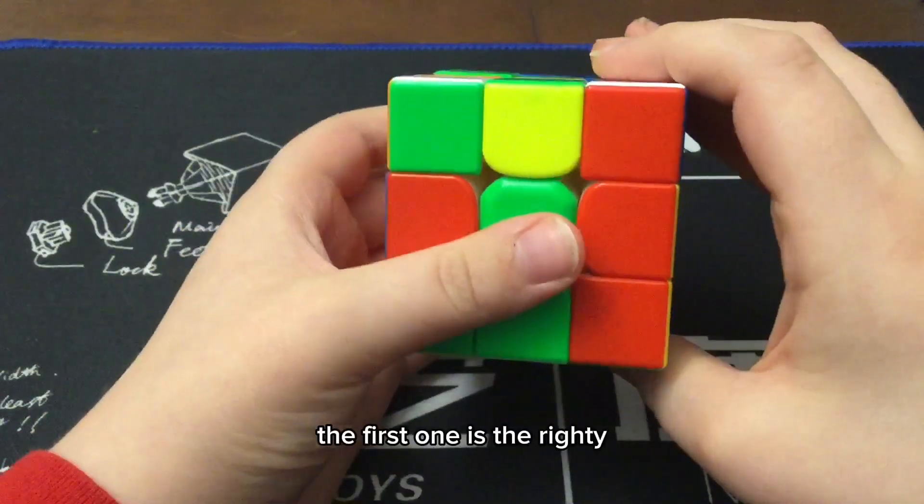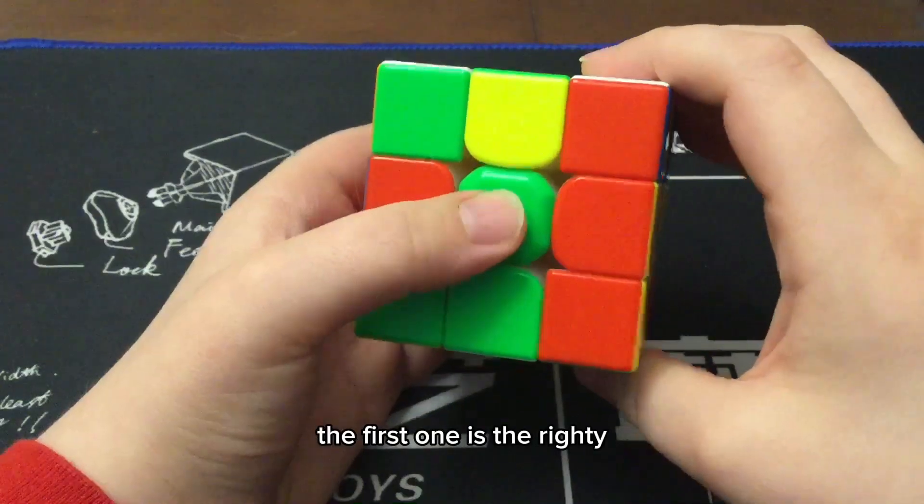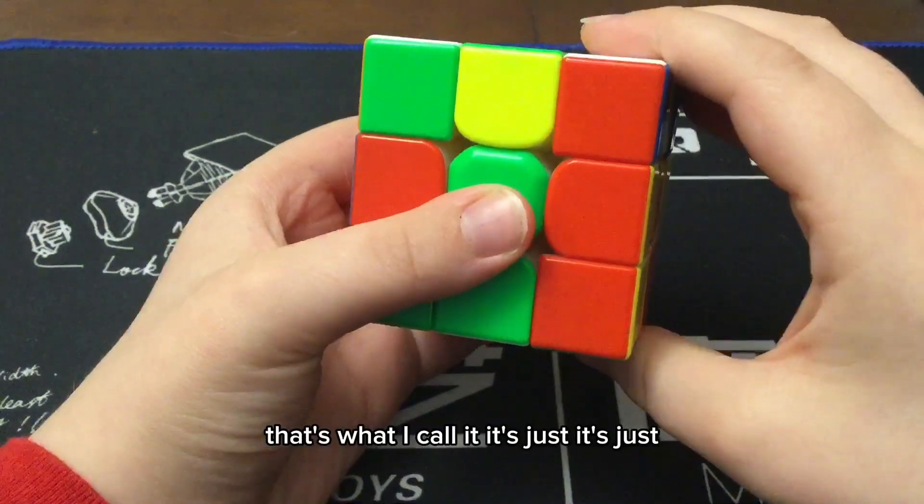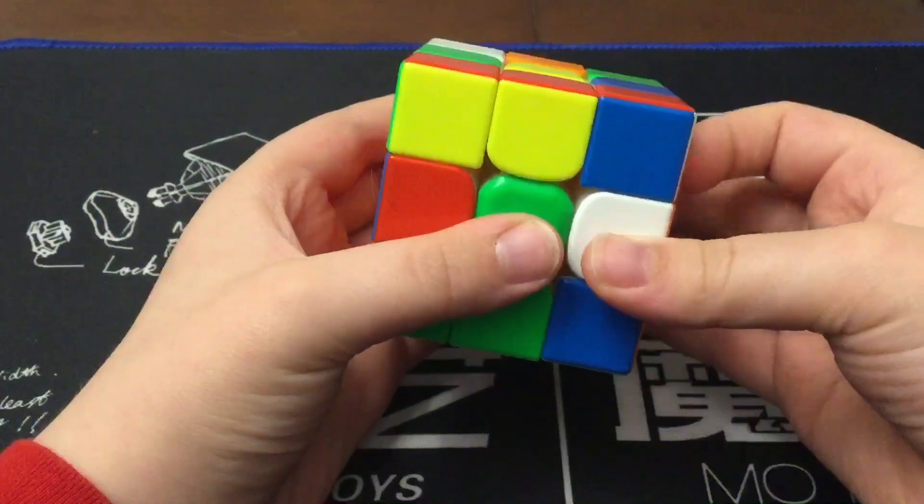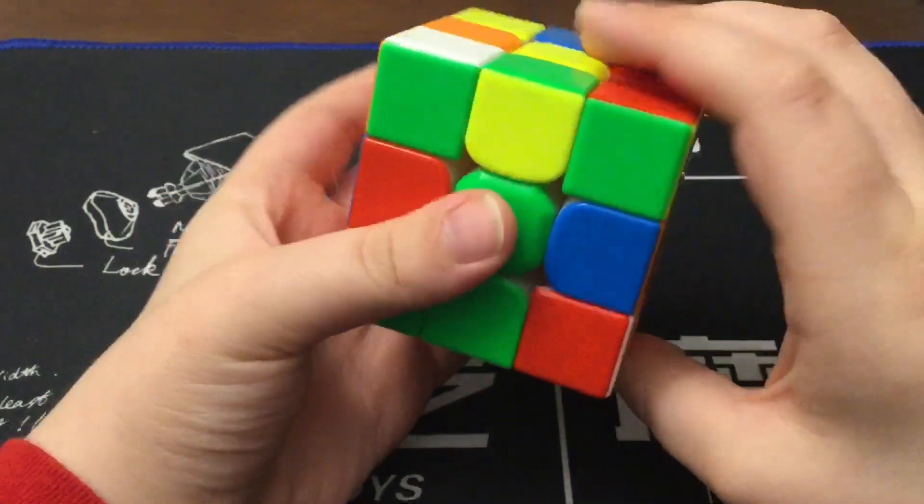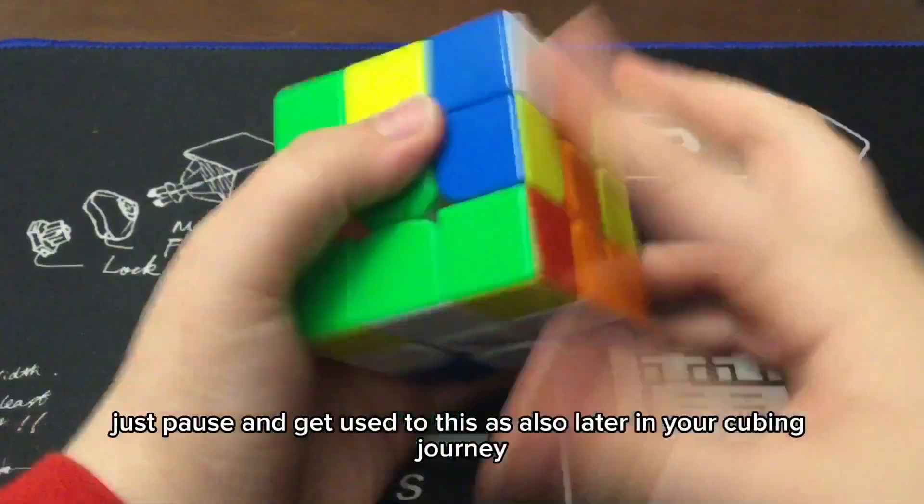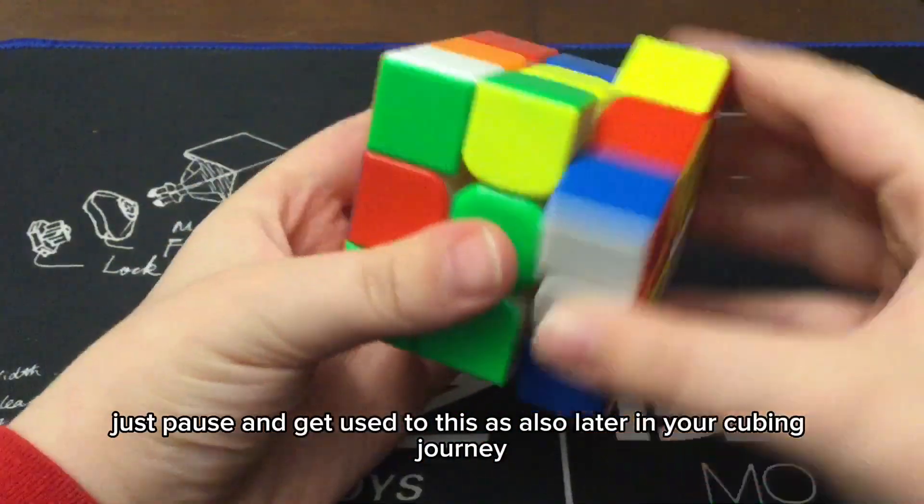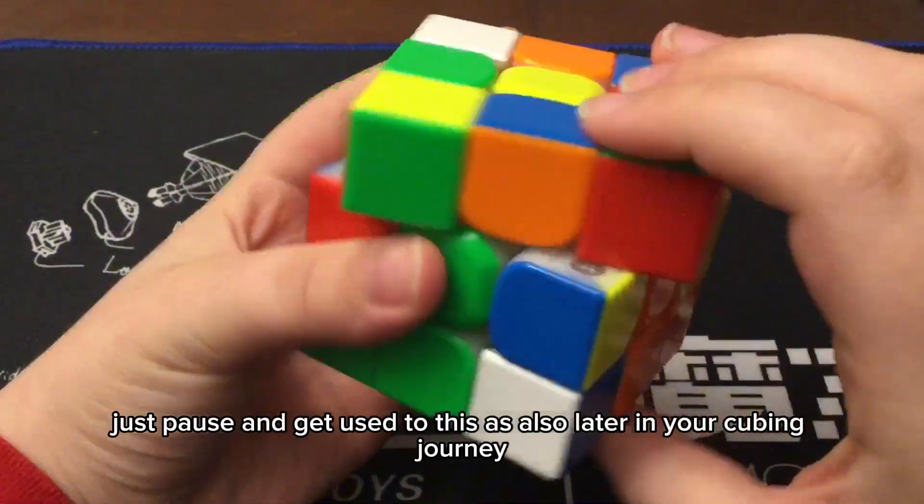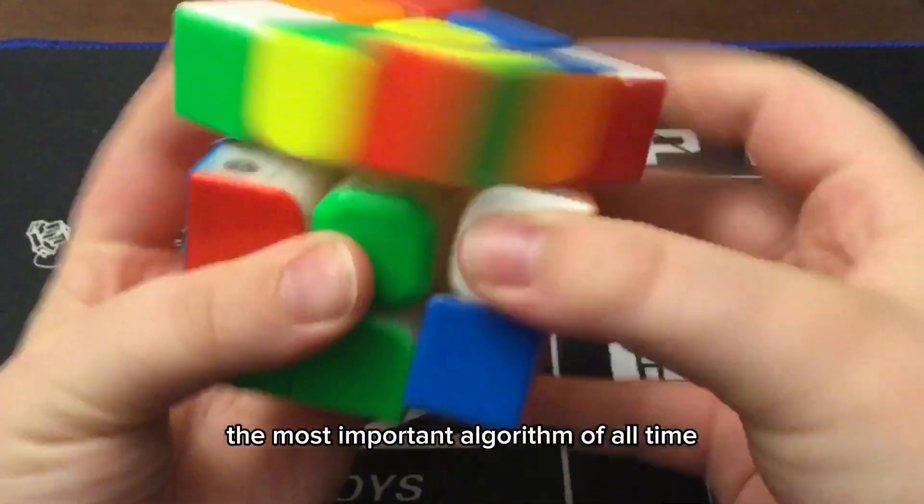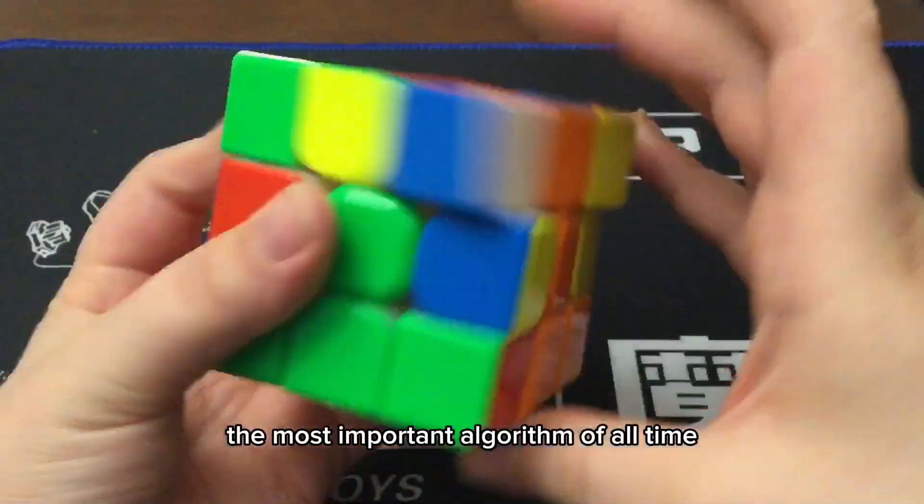The first one is the righty, that's what I call it. Just pause and get used to this, as also later in your cubing journey, this is going to be literally the most important algorithm of all time.